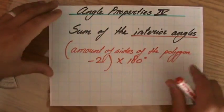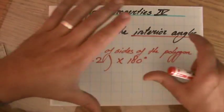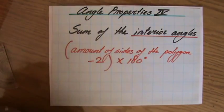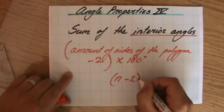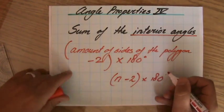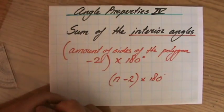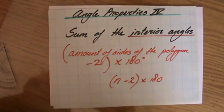Now, we are mathematicians. We're not doing English here, so am I going to write down every time the amount of sides of the polygon, minus two times 180? No. We write down N minus two times 180 degrees, where N stands for the amount of sides of the polygon.